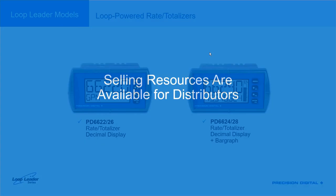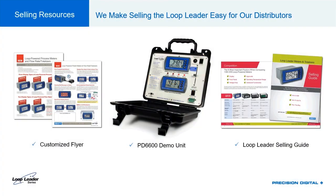For distributors in the audience, there are several selling tools available. Customized flyers — a one-page front-and-back document covering Loop Leader features and talking points — can be customized with your company information, and Precision Digital can show you how to design these yourself on their website. There's also a new demo kit with two meters: a process meter or rate totalizer on top and the feet and inches version on the bottom, with slide potentiometers to demonstrate relays, open collector outputs, and pump alternation control.